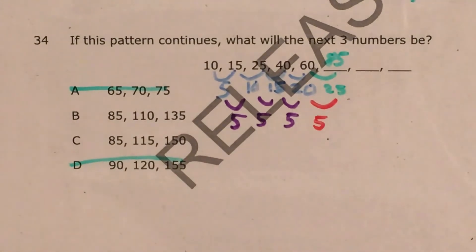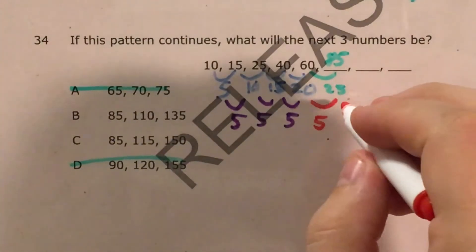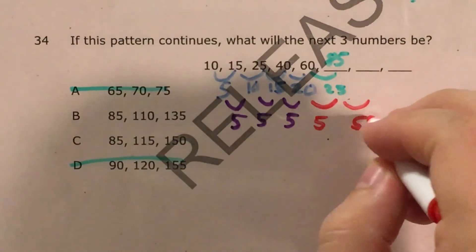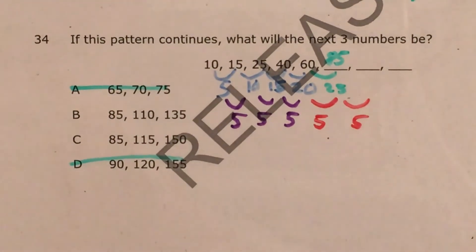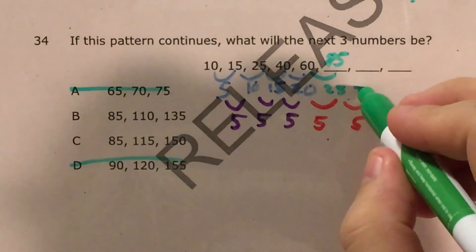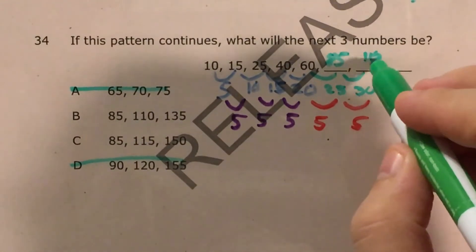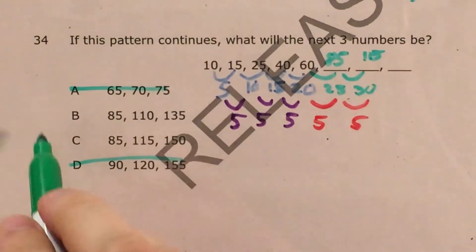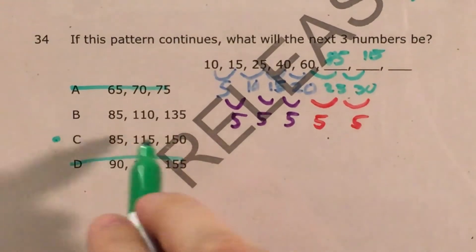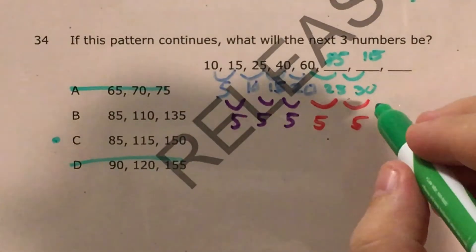So let's continue this. I'm going to add 5 to the number that I'm adding every time. 25 plus 5 is 30. And 85 plus 30 is 115. We have an answer that has that. Let me just make sure that it's going to give us 150 next.